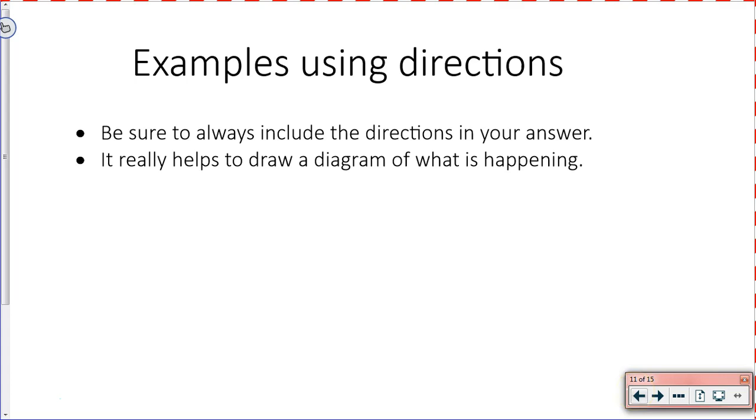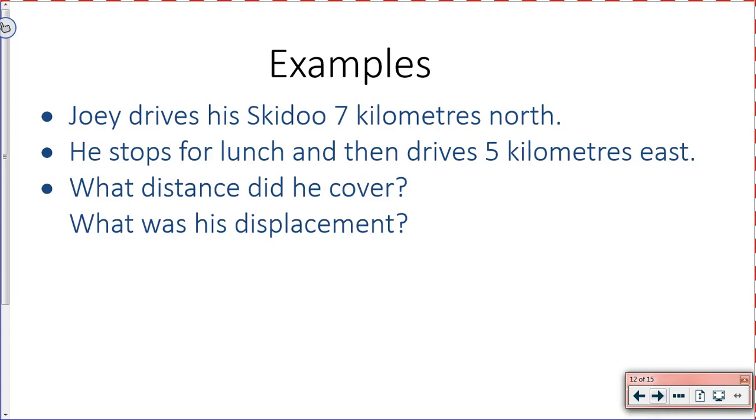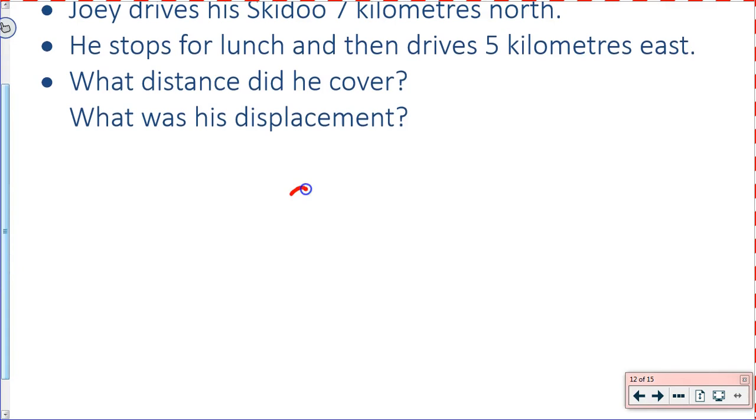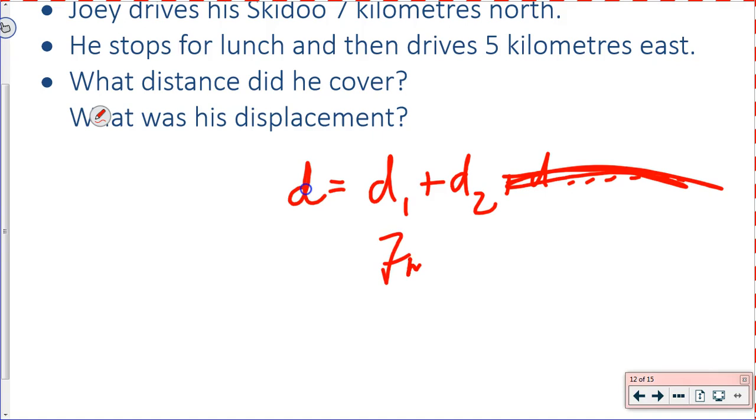All right. Be sure to always use directions in your answer. Draw diagrams. It can help you. Kind of like we did with Rainer in the garbage can. As we get into this next example, drawing a picture is going to be very helpful. But make sure you always include the direction as long as it's a vector. Joey drives a skidoo 7 kilometers north. He stops for lunch and then he drives 5 kilometers east. What is the distance he covered? What is his displacement?